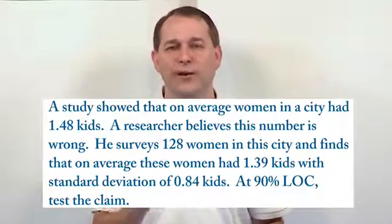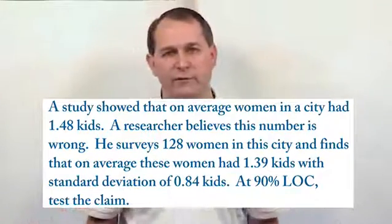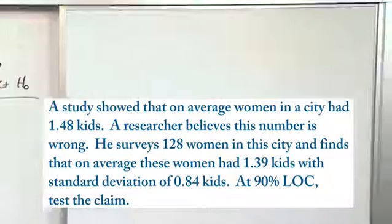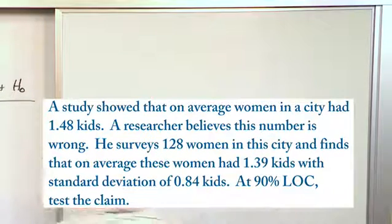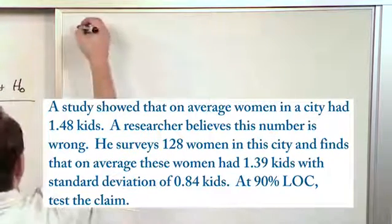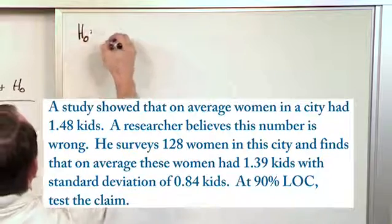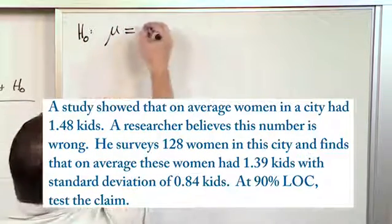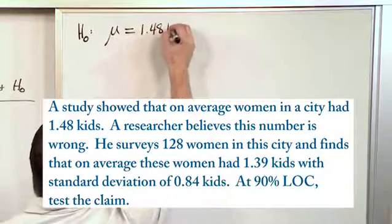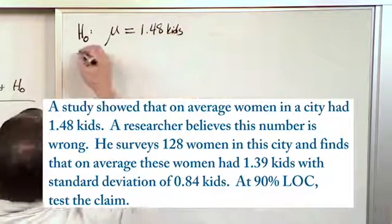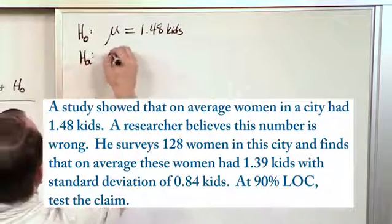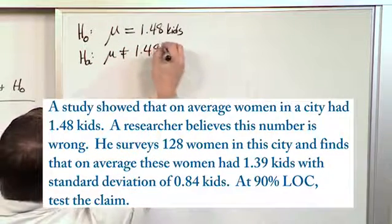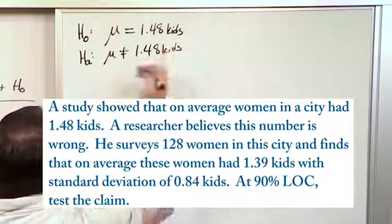So that implies it's a two-tail test. We've been doing tons of problems with two-tail tests, and we're going to do this one using hypothesis testing with p-values. The null hypothesis is that the mean number of children equals 1.48 kids. The alternate hypothesis, which has to be the opposite, is that the mean is not equal to 1.48 kids. That's all we really know about the hypothesis.